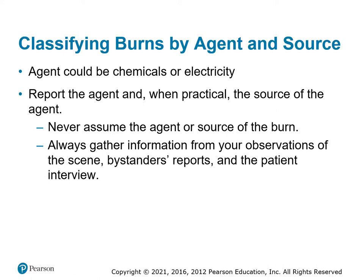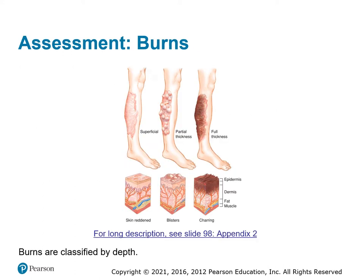We have three depths of burns. Superficial — everyone's had a sunburn; that's just reddening of the skin. When it starts to blister, that's partial thickness — it's getting down into the dermis, causing fluids to leak into the tissues. Full thickness goes through the dermis into the fatty tissue and muscle below; it looks black and charred. The good thing for the patient is the center of a full-thickness burn has probably burned through the nerve endings, so it won't be painful. The painful part is the surrounding partial-thickness area where nerve endings are still intact.